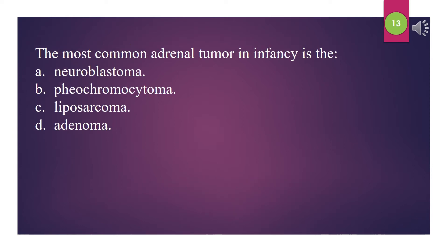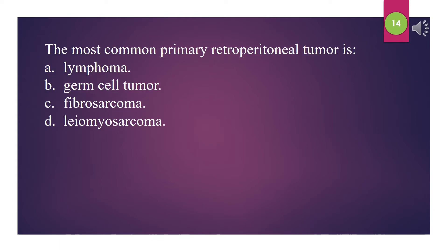The most common adrenal tumor in infancy is the: A. Neuroblastoma. B. Pheochromocytoma. C. Liposarcoma. D. Adenoma. The answer is A: Neuroblastoma. The most common primary retroperitoneal tumor is: A. Lymphoma. B. Germ cell tumor. C. Fibrosarcoma. D. Leiomyosarcoma. The answer is A: Lymphoma.